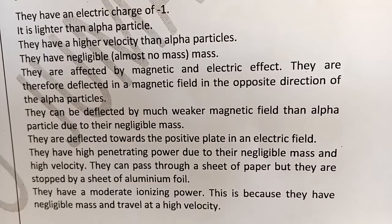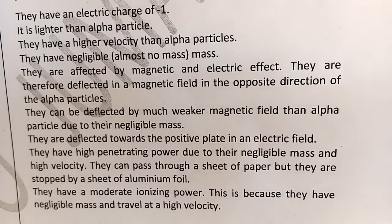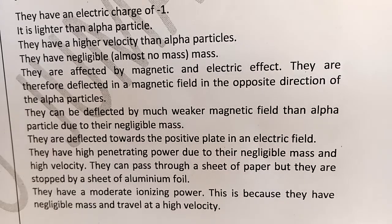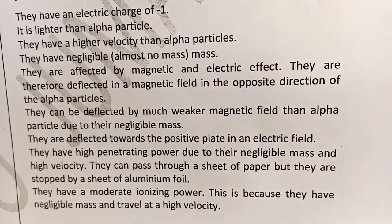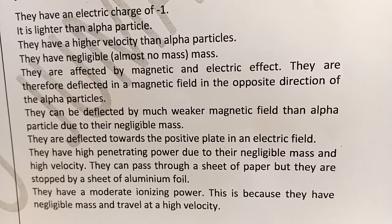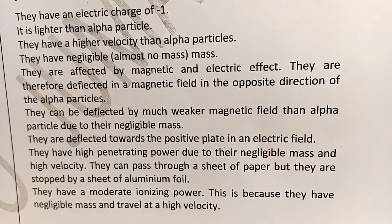Beta particles can be deflected by a much weaker magnetic field than alpha particles due to their negligible mass. They are deflected at a much greater angle compared to alpha particles, and they are deflected towards the positive plate in an electric field.